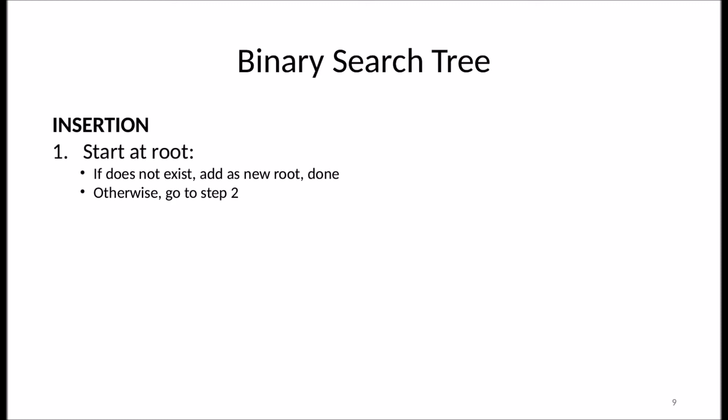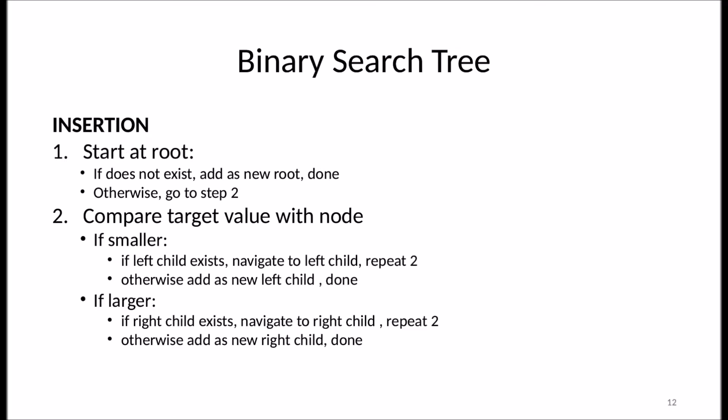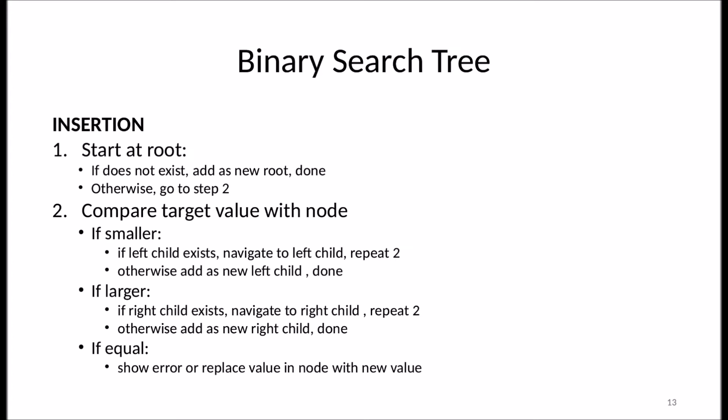The insertion algorithm starts at the root node. If it does not exist, we create a new node with the value and we're done. Otherwise, we compare the new value to the current node. If the new value is smaller, we check the left side — if a left child exists we navigate there; if not, we create a new left child. If the new value is larger, we check the right side — if a right child exists we navigate there; if not, we create a new right child. We repeat this process as we navigate. If we encounter equality, we either show an error that no duplicates are allowed, or replace the current value.